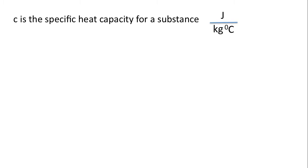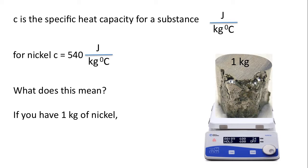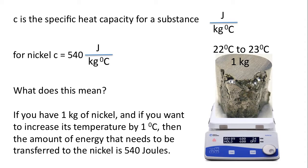C is the symbol used to represent specific heat capacity for a substance. The unit is joules per kilogram degree Celsius. For example, for a piece of nickel the specific heat capacity is 540 joules per kilogram degree Celsius. Imagine we had one kilogram of nickel and we want to increase its temperature from 22 to 23 degrees Celsius — an increase of one degree Celsius. The amount of energy that needs to be transferred is 540 joules, assuming 100% efficiency. If we want to increase the temperature by two degrees Celsius, it would be 1080 joules.